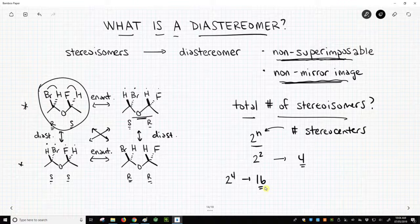So let's say we have four stereocenters, two to the fourth, potentially 16 stereoisomers. If we pulled one molecule out of there, there would be one enantiomer to that molecule, and that one molecule would have 14 diastereomers. So you can have lots of diastereomeric relationships.